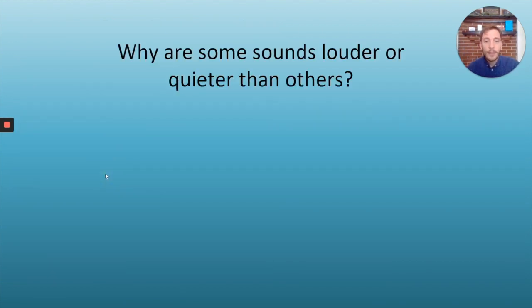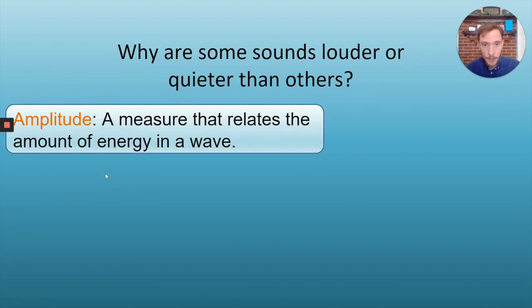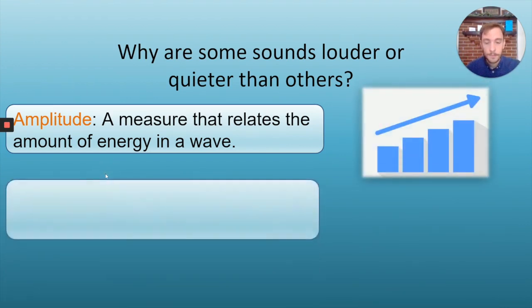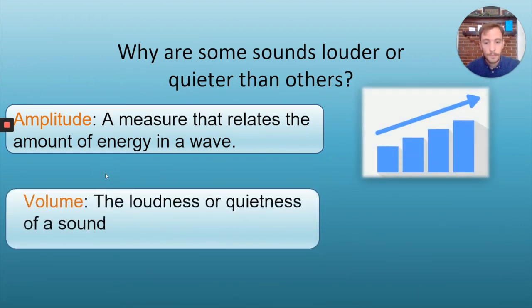So now that we understand how sound waves travel, we can take a look at some of the different qualities that sound waves have. For example, why are some sounds louder or quieter than others? This has to do with amplitude. Amplitude is just a measure of the amount of energy that's in a wave.